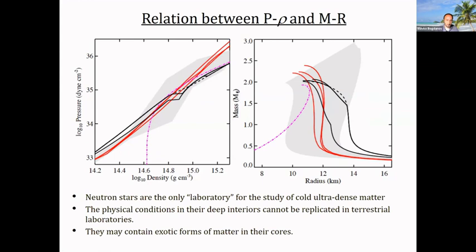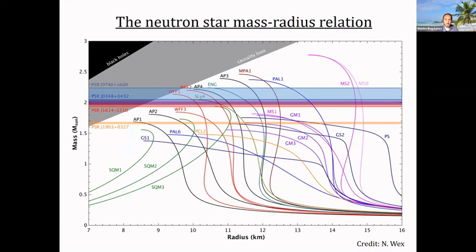As Thankful already mentioned, radio pulsar timing provides one constraint on the mass-radius relation, primarily for high-mass stars. But ideally we want to combine those measurements with techniques that offer insight into the radius of the neutron star, and from there generate even more interesting constraints on the plausible equation of state of nuclear matter. There are a multitude of theoretically well-motivated possibilities for what the mass-radius relation could be, so we want to restrict this parameter space as much as possible.